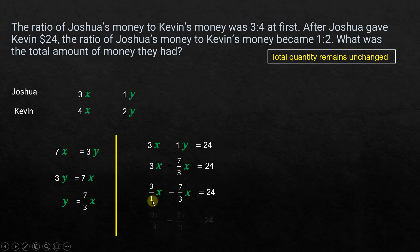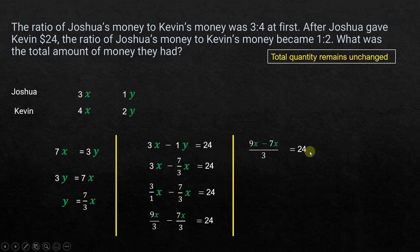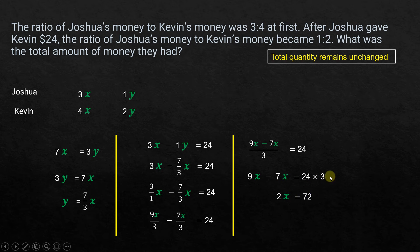So (9/3)x minus (7/3)x equals 24. Since the denominators are the same, we subtract numerators: (9x − 7x)/3 = 24. Multiplying both sides by 3 cancels the denominator: 9x − 7x = 24 × 3. That gives 2x = 72, so x = 72 ÷ 2 = 36.